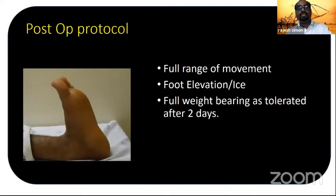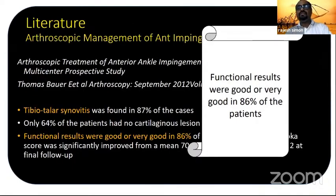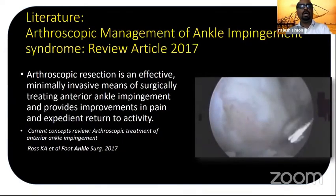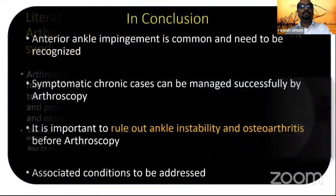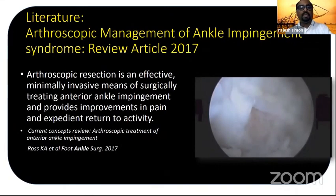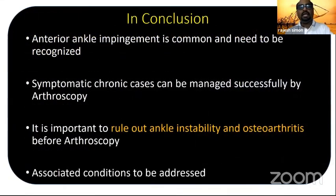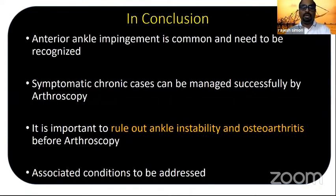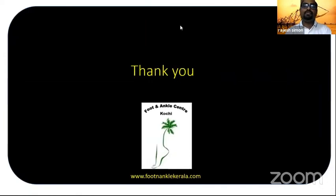Literature shows functional results are good to very good in 86% of patients. A 2017 review article confirmed arthroscopic results are excellent and very effective for these problems. In conclusion: anterior ankle impingement is very common; symptomatic chronic cases can be managed successfully by arthroscopy. It is important to rule out instability and arthritis before arthroscopic impingement removal, and associated conditions must be identified and addressed properly.